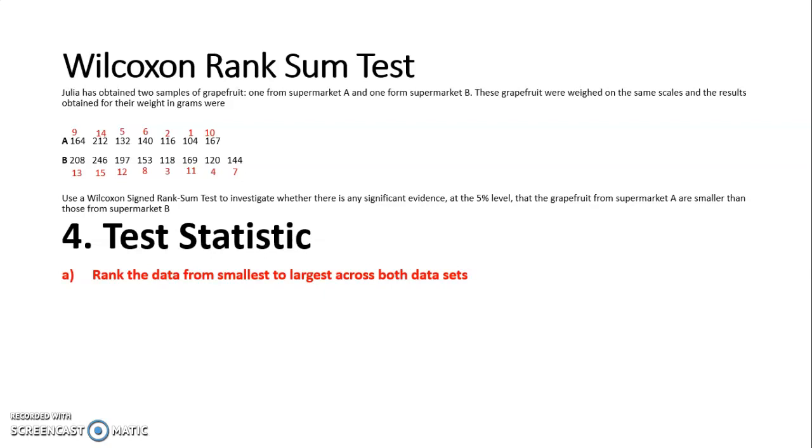So our next step is to calculate the total of the ranks for each variable. So I am going to add up all the ranks for Supermarket A, which is 9, 14, 5, 6, 2, 1 and 10. And that gives me a total of 47. And then I am going to do the same with the ranks for the values of Supermarket B, which add up to 73.